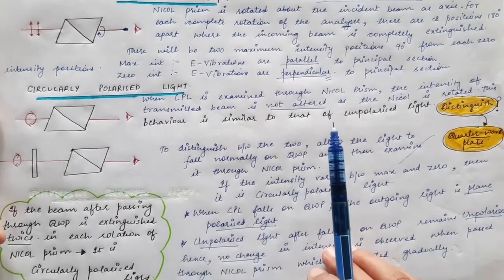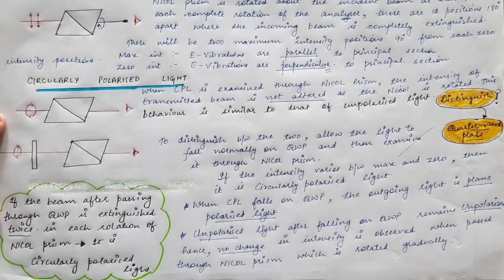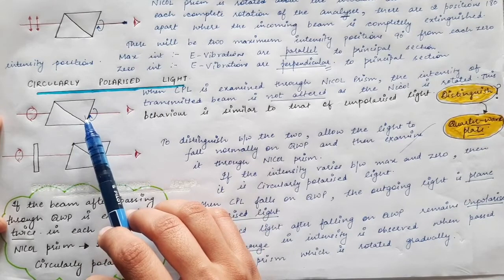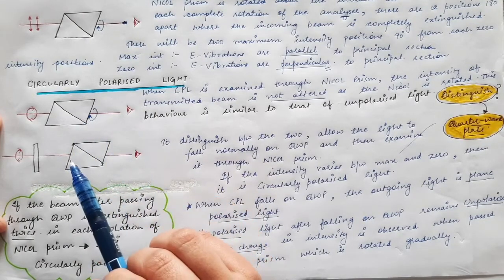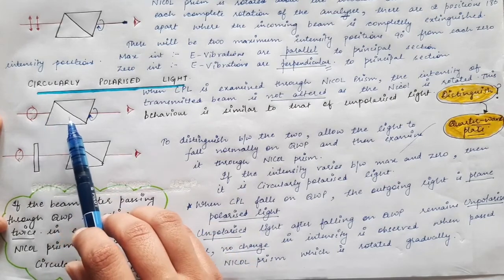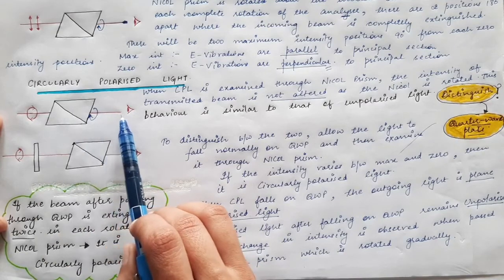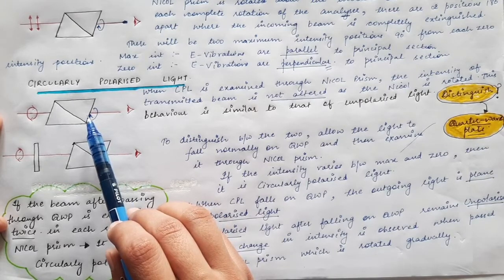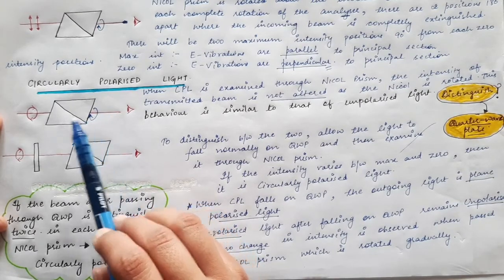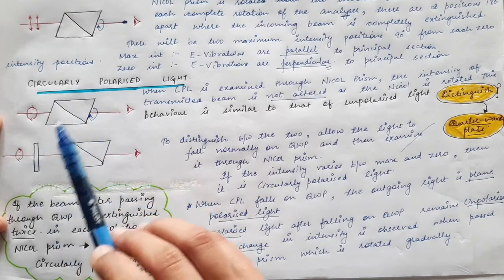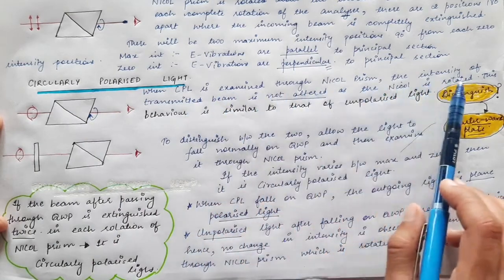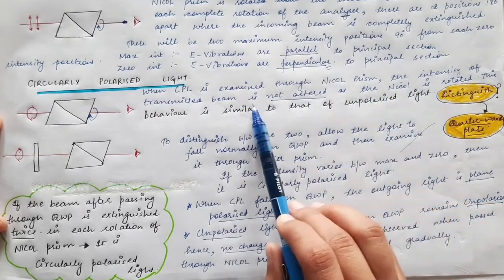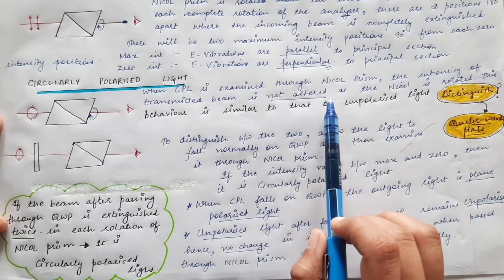Now we will see how to detect circularly polarized light. When circularly polarized light is made to fall on a Nicol prism and the prism is gradually rotated, it is found that the intensity of the transmitted beam remains the same throughout one complete rotation. So when circularly polarized light is examined through a Nicol prism, the intensity of the transmitted beam is not altered as the Nicol is rotated.